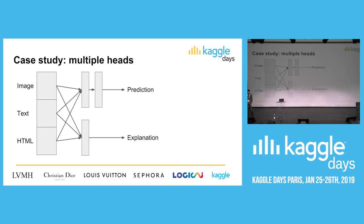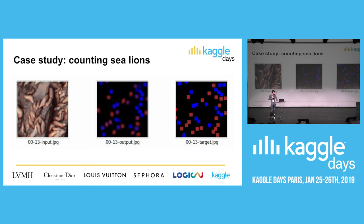Question: regarding the sea lions competition, was it a multitask network doing segmentation and counting? Not exactly. The network did only segmentation - predicting a probability density map separately for each class of sea lion. To predict the count, I had a second-level model. I created about ten features from these probability maps - the sum of probabilities over the whole map, sums above various thresholds, blob detection results - and fed them into an XGBoost model which predicted the actual count. As they say, you can't win Kaggle without XGBoost.